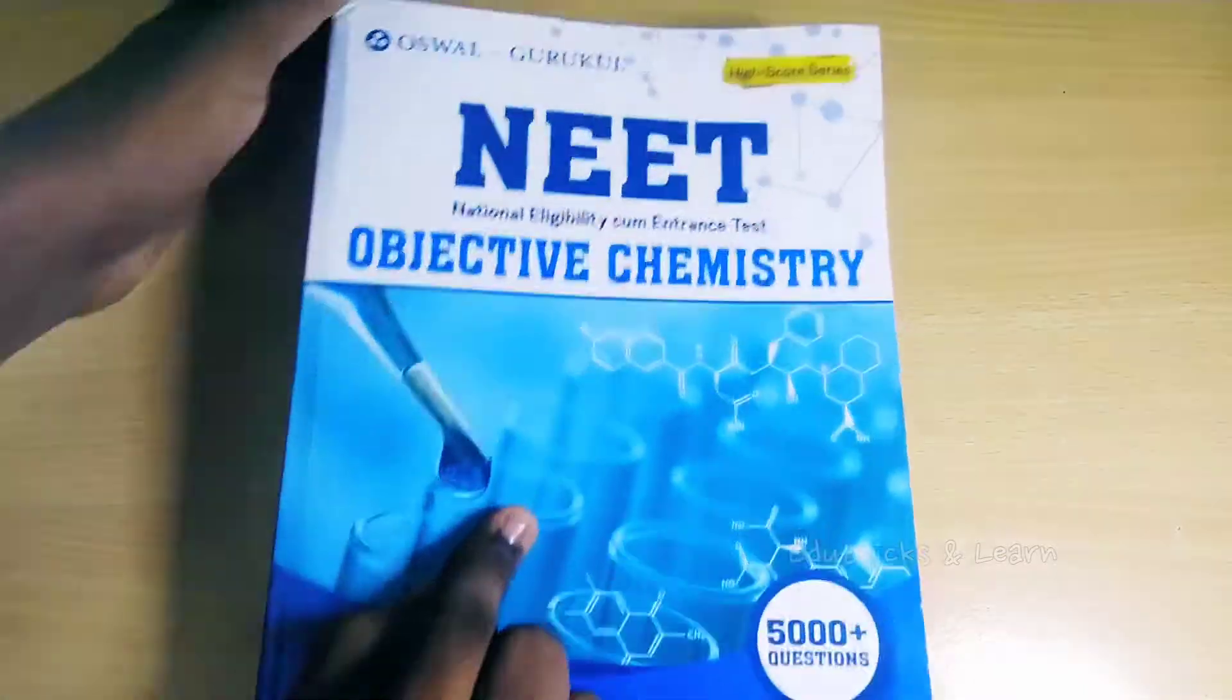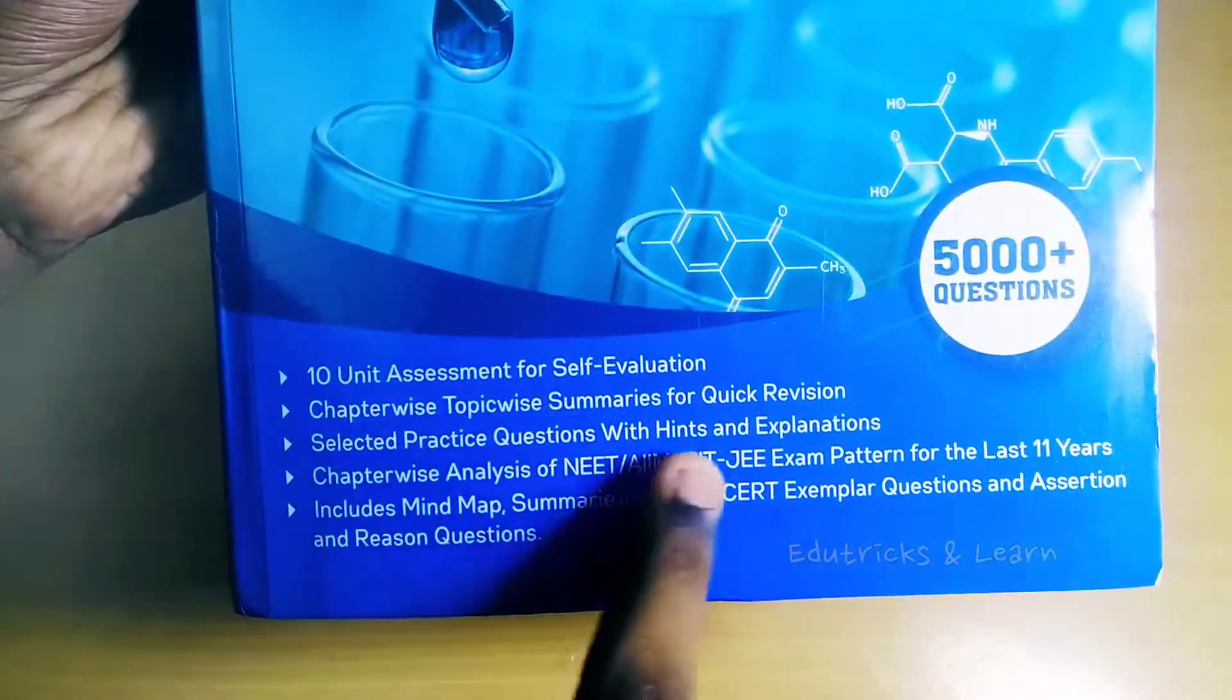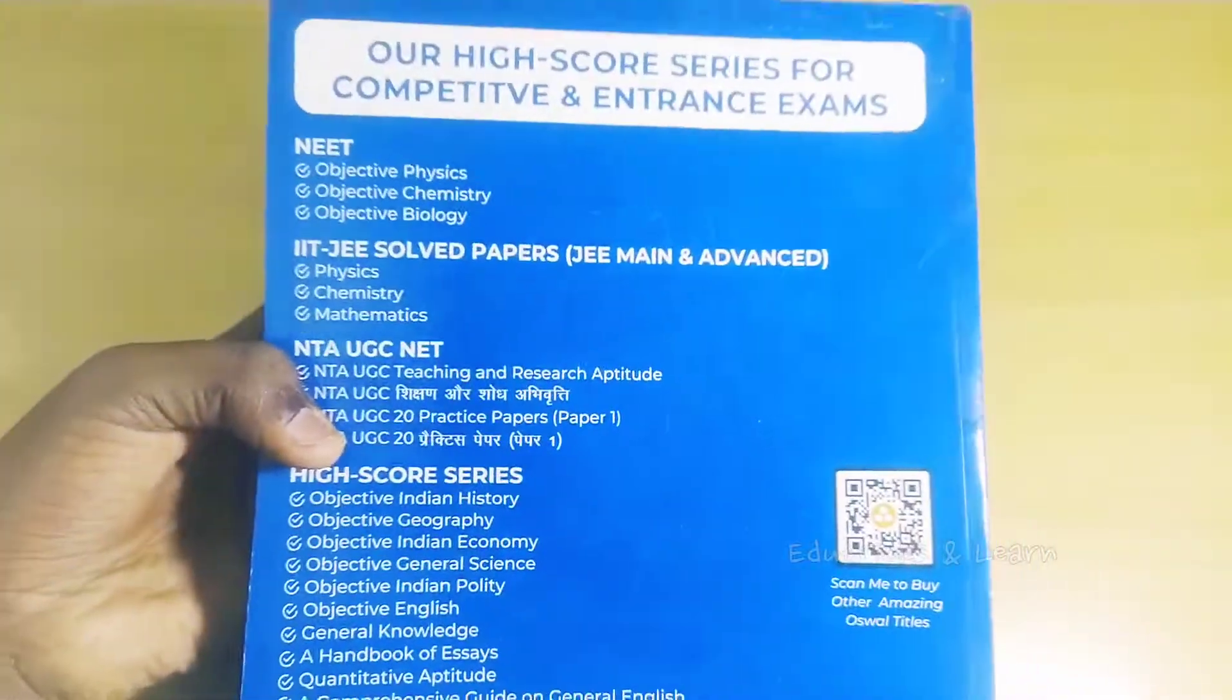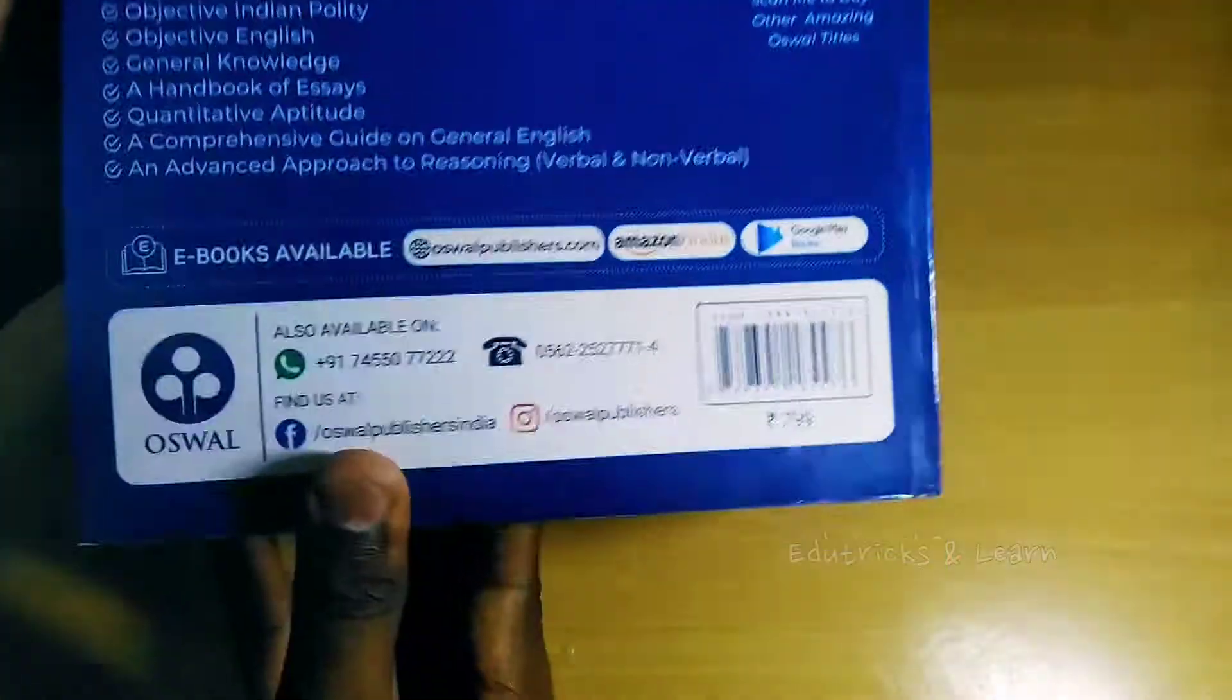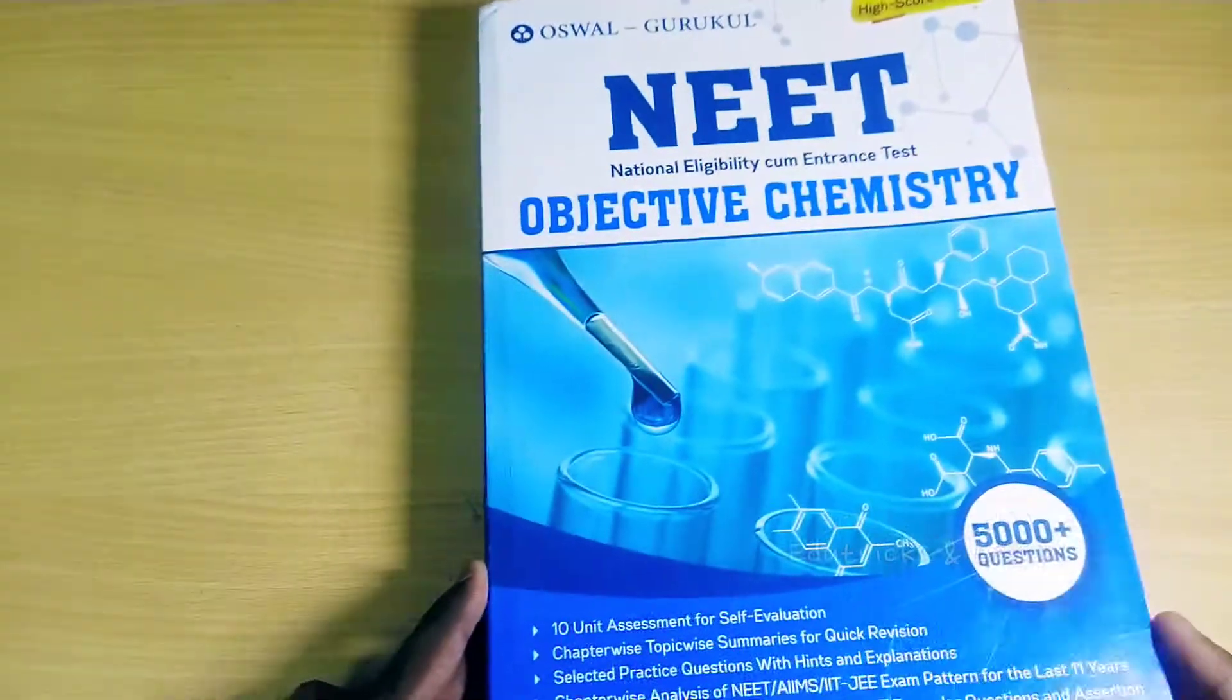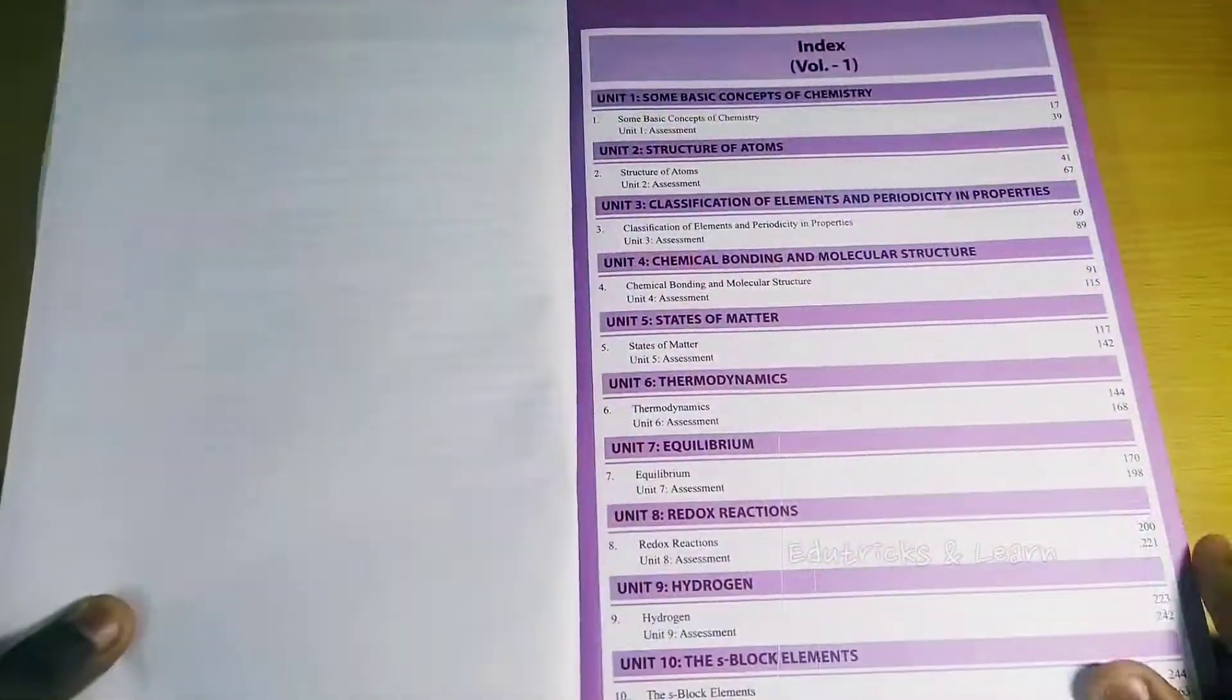This is Oswal Gurukul high score series NEET objective chemistry. This book contains 5000 plus questions, 10 unit assessments for self-evaluation, chapter-wise questions, selected questions with hints and explanations. This book is available for physics, chemistry, and biology. The rate is Rs 799, but if you buy on Amazon, Flipkart, or their own website, it will be cheaper. Let's go into this book deeper.